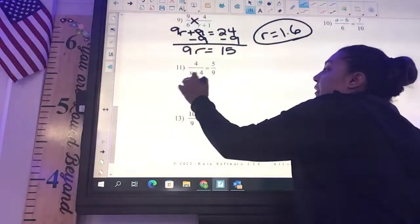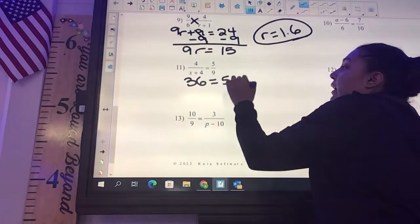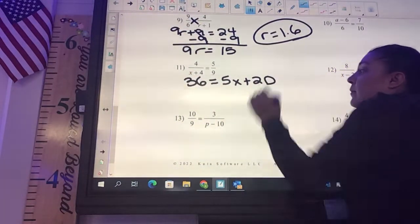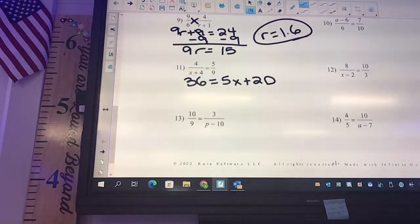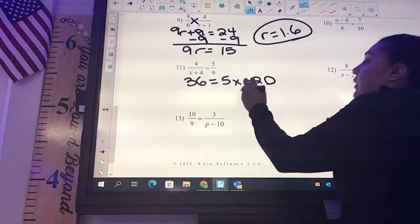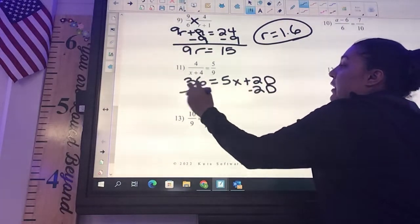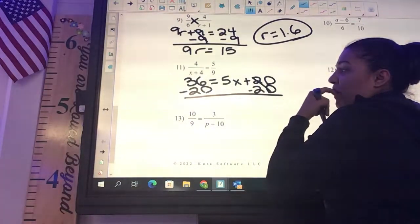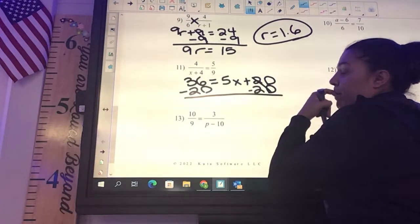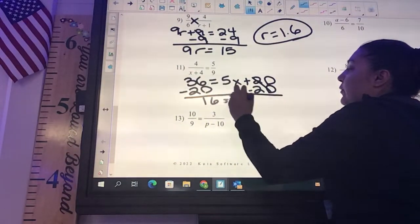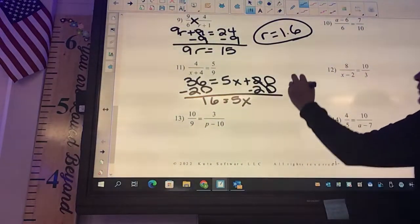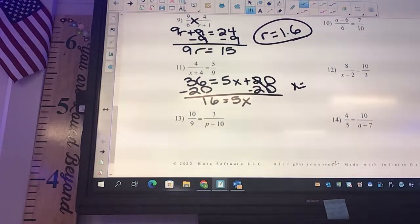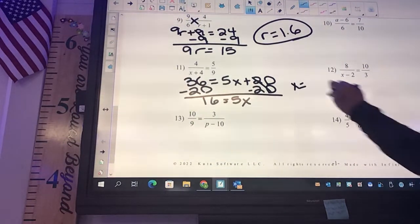9 times 4, you're going to get 36 equals 5x plus 20. Minus 20 from both sides. And you're going to get what? 16 equals 5x. So 16 divided by 5, what are you going to get? 3.2.